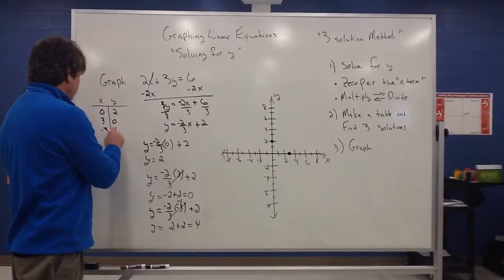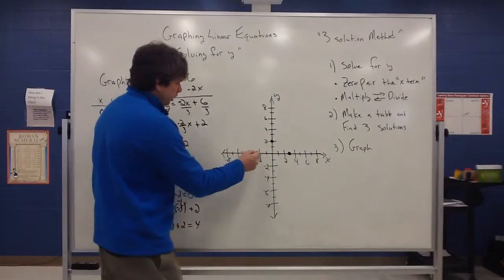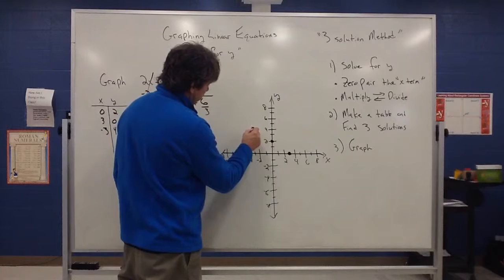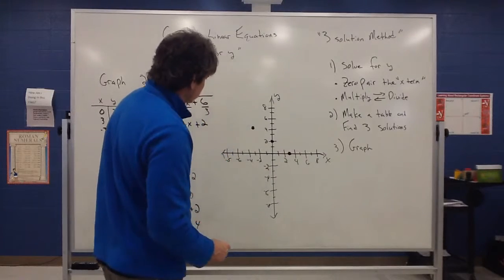So I chose x to be negative three and y became a four. So negative three, four would also be a solution. So negative three, four would be at that spot.